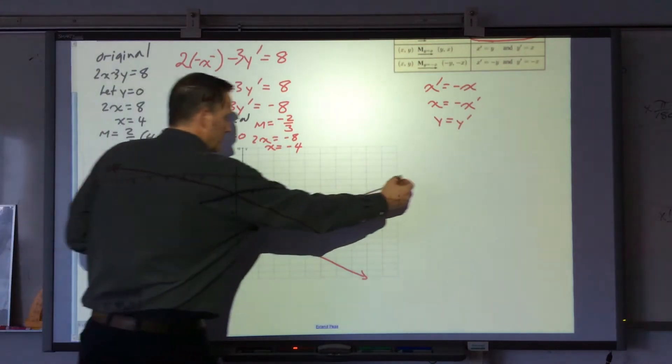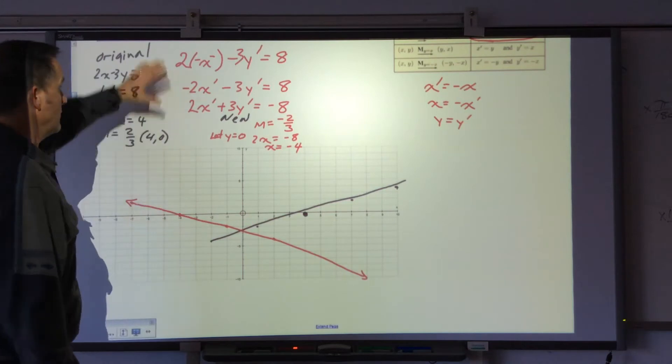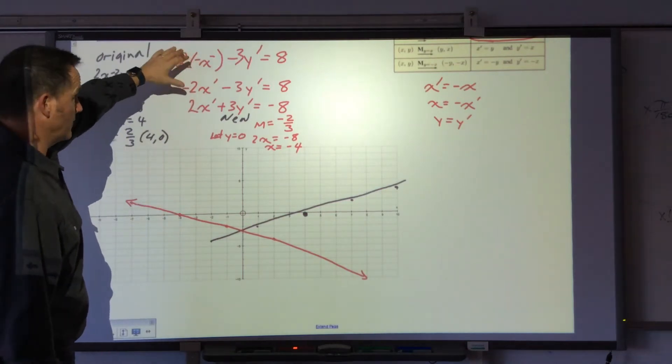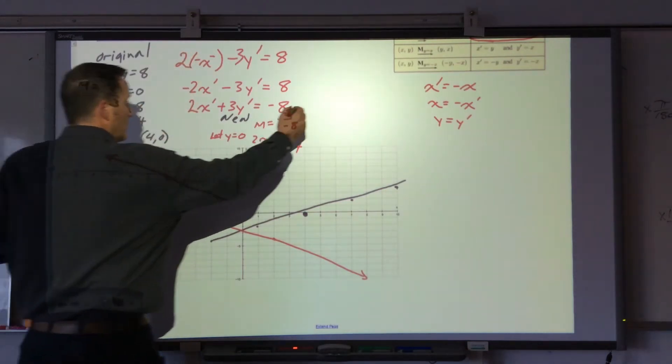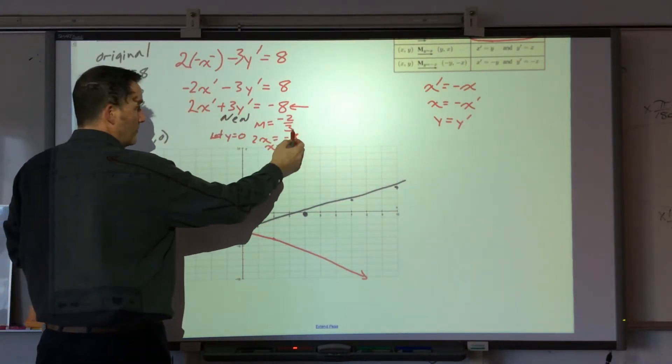I graphed this line, and then I found the information for the reflection line. This is my reflection line, and because of the positive here, I have a slope of negative 2 over 3.